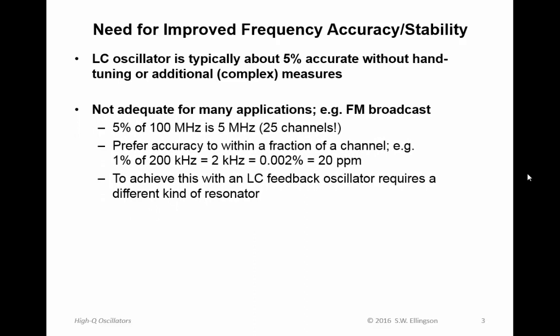Just to give you one example: FM broadcast radio. That's in the frequency range 88 to 108 megahertz, using channels which are about 200 kilohertz wide. Let's pick a typical frequency in the band — maybe 100 megahertz. 5% of 100 megahertz is 5 megahertz. And since the channels are 200 kilohertz wide, that's 25 channels. So an LC feedback oscillator is typically not going to be good enough for FM broadcast applications.